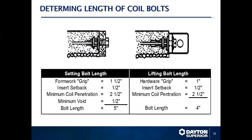To determine the length of the coil bolt: you need the formwork grip, the insert setback, the minimum coil penetration, the minimum void space needed on the end of the bolt on the other side of the coil insert — and that will give you the overall bolt length. Also make sure you consider all formwork and everything else required to achieve that concrete pad.